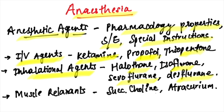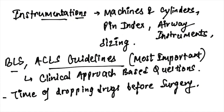For muscle relaxants, revise succinylcholine and atracurium. In anesthesia, also revise the instruments, machines, and cylinders. Pin indexes are commonly asked nowadays. Also cover airway instruments and the sizing of instruments in both the pediatric and adult groups.